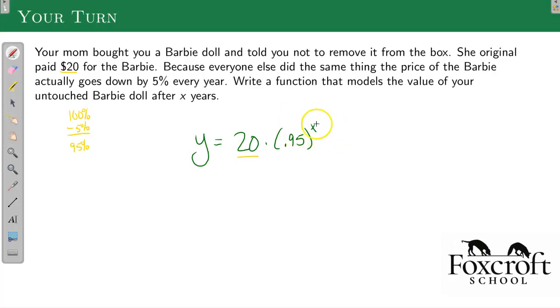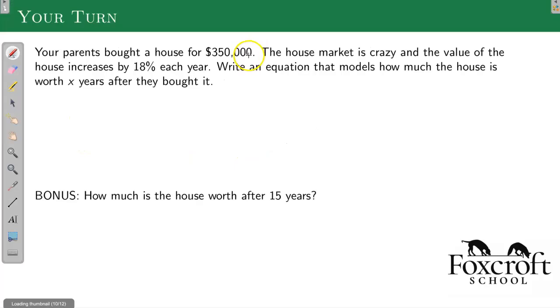So if I cared about 5 years later, I'd put a 5 here. 20 years later, I'd put a 20 there. Here's another one. Your parents bought a house for $350,000. Because of COVID, the housing market is shooting up, and it increased by 18% each year. Write an equation. So take a second. Pause the video. Try that one. I'll show you the answer in 3, 2, 1. And that's my initial value. I'm increasing by 18%. I'm going to add that to 100%. And that's how much your parents' house is worth after X years.